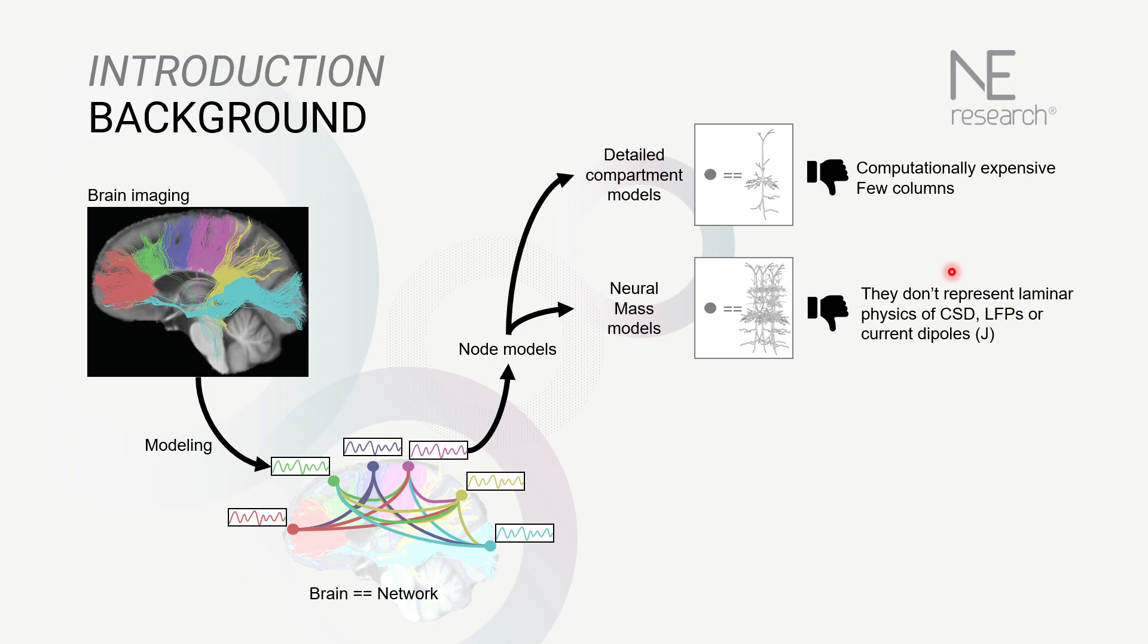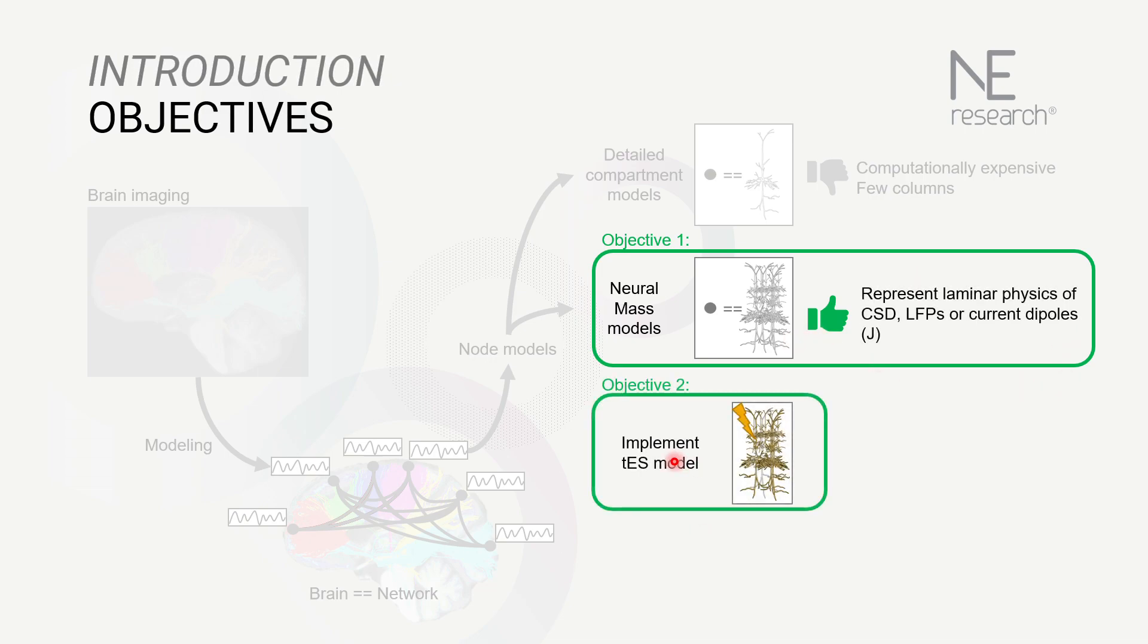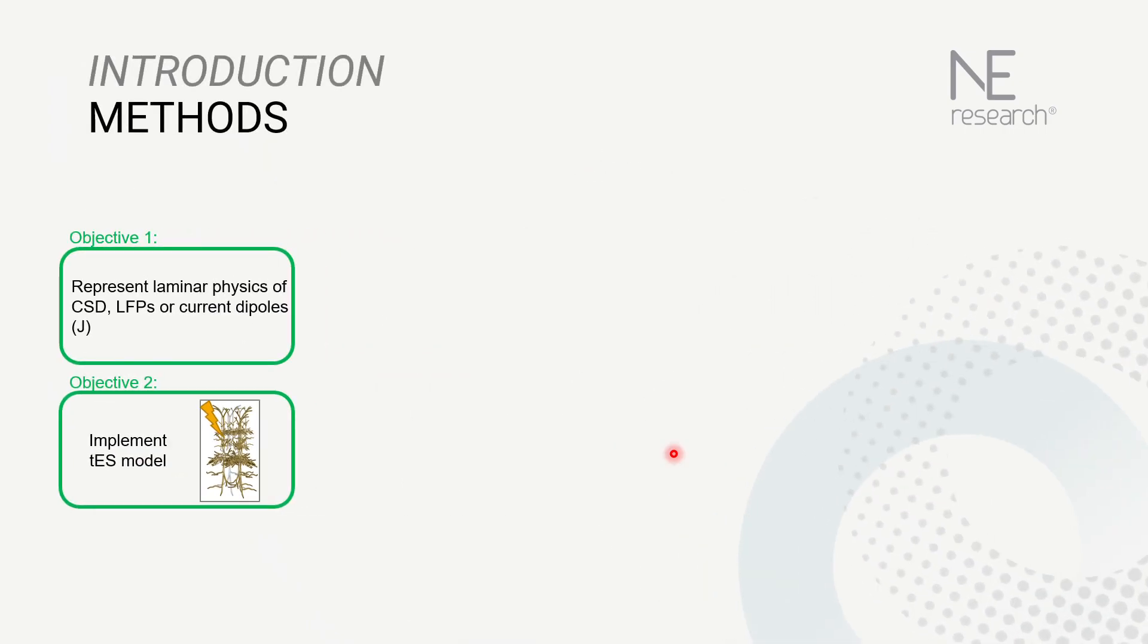Therefore, the objectives of this study are to represent the laminar physics using neural mass models and to represent laminar electrophysiological activity under TES. So how do we target those objectives?